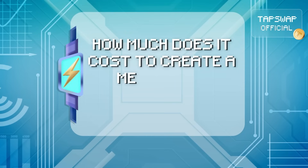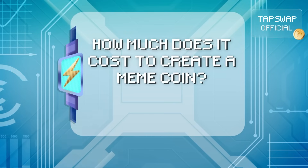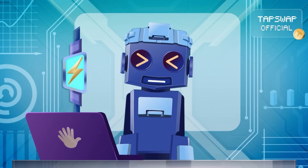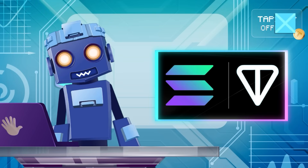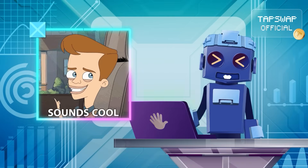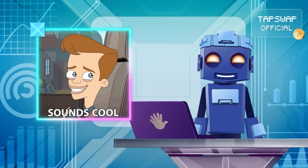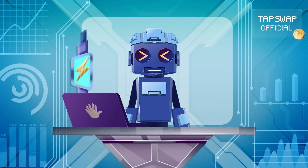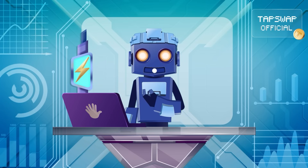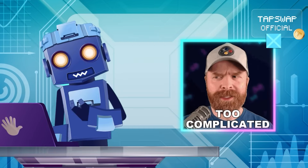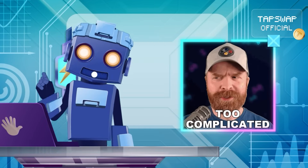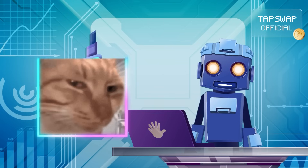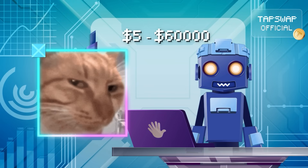How much does it cost to create a meme coin? It can change depending on factors like the platform you choose to launch it on. If you pick TON or Solana, the cost will be the lowest and the chances for success the greatest. The cost also depends on how complex the coin is — more advanced features will raise the cost. In general, creating a meme coin can cost between $5,000 and $60,000.